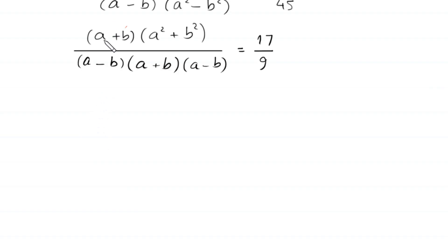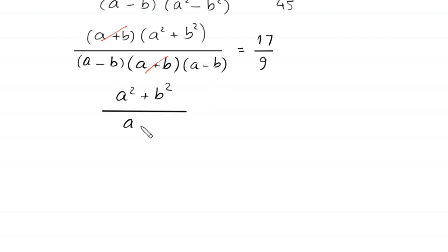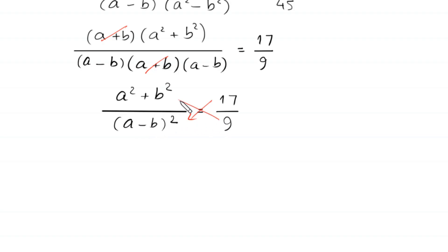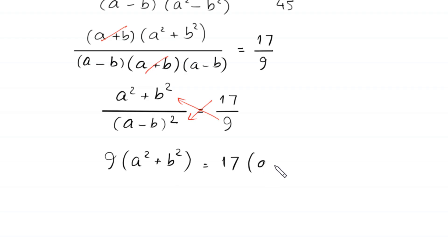The (a + b) factor cancels out, and (a - b)(a - b) becomes (a - b)², leaving us with (a² + b²) divided by (a - b)² equals 17 over 9. Using cross multiplication, this becomes 9(a² + b²) = 17(a - b)².